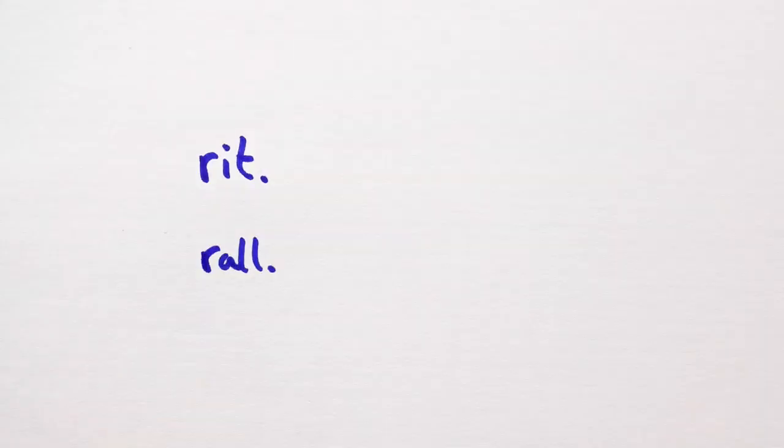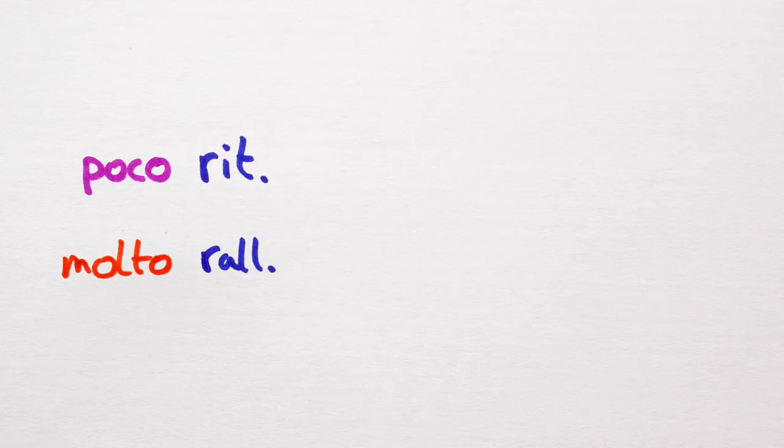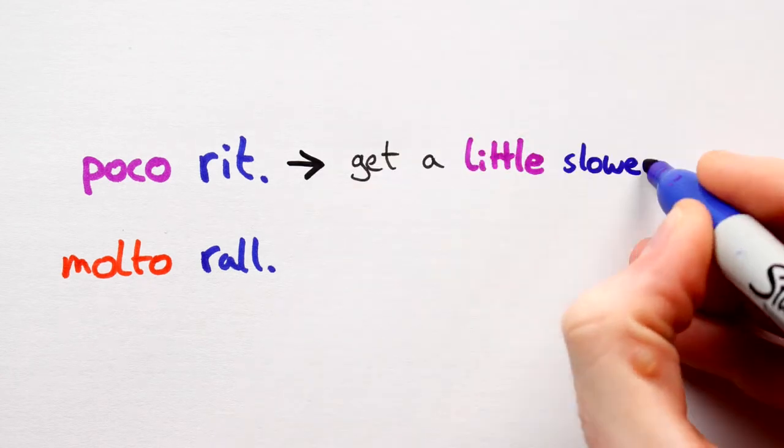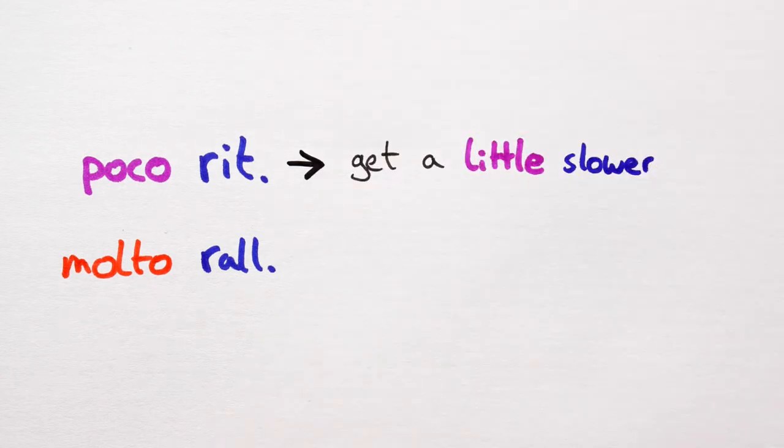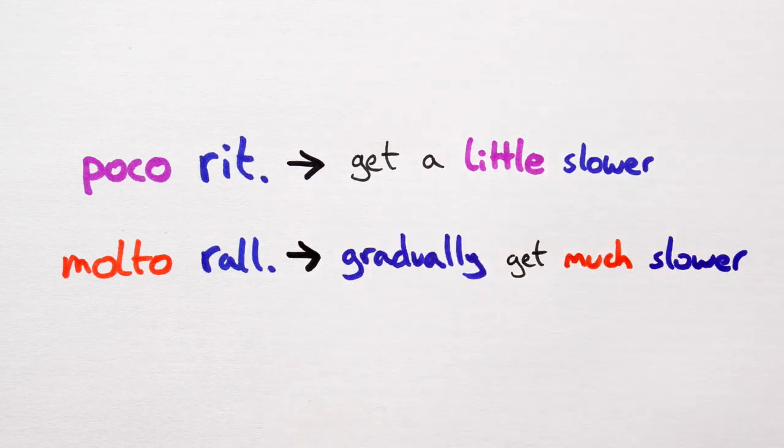Now, we can modify these terms by adding words like poco, the Italian word for little, and molto, the Italian word for much or very. So, poco rit would require us to play a little slower. And molto ral would require us to gradually get much slower.